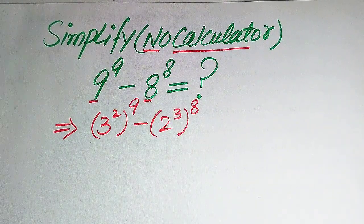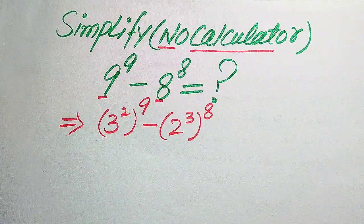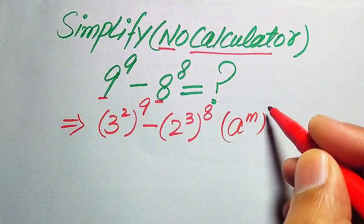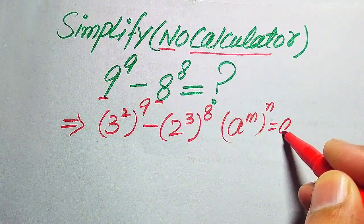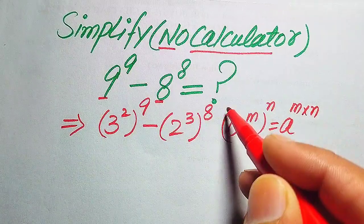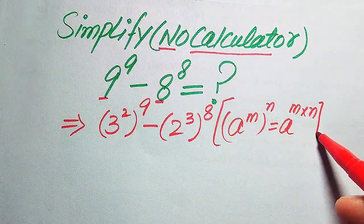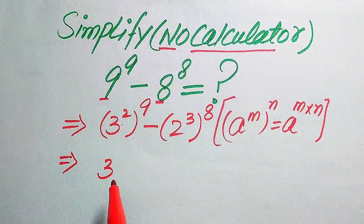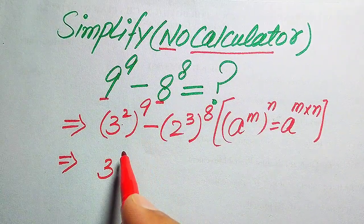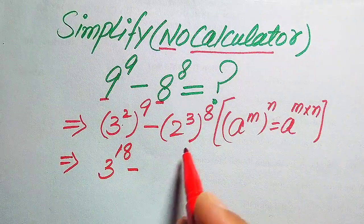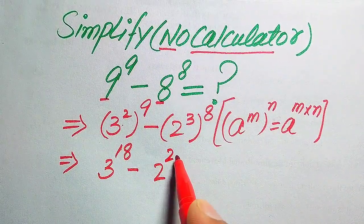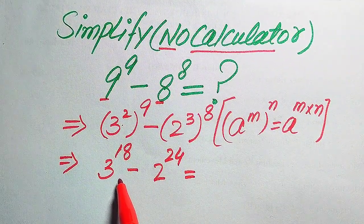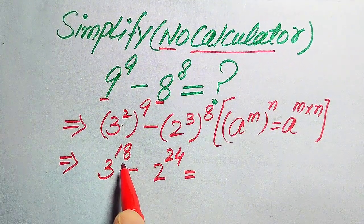Now we use the exponential law: if we have a to the power of m, to the power of n, it equals a to the power of m multiplied by n. According to this exponent law, we multiply the two exponents. So 3 squared to the power of 9 becomes 3 to the power of 18, minus 2 cubed to the power of 8 becomes 2 to the power of 24.